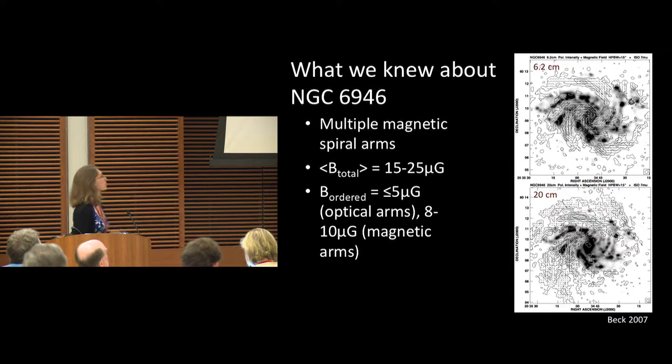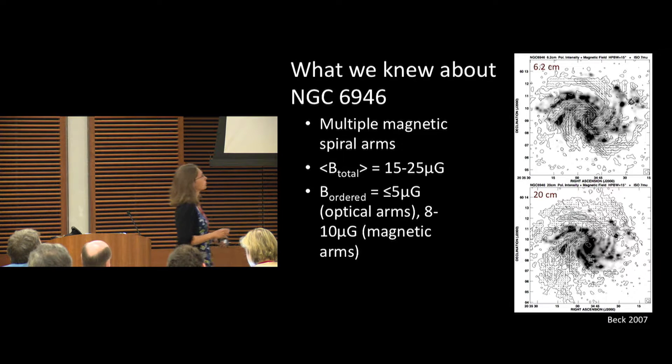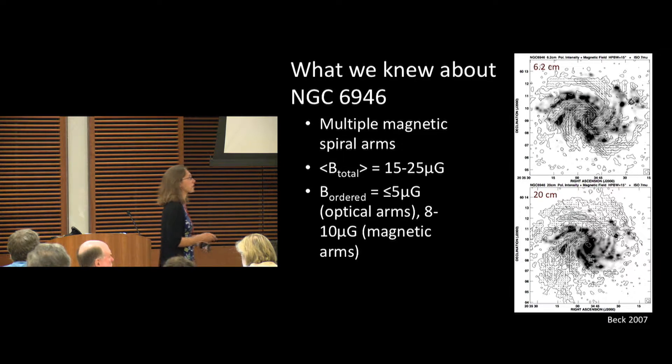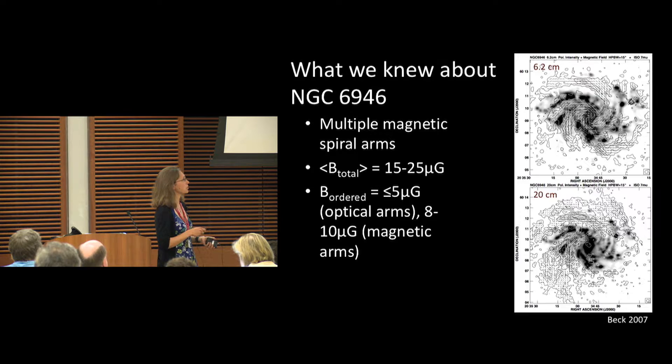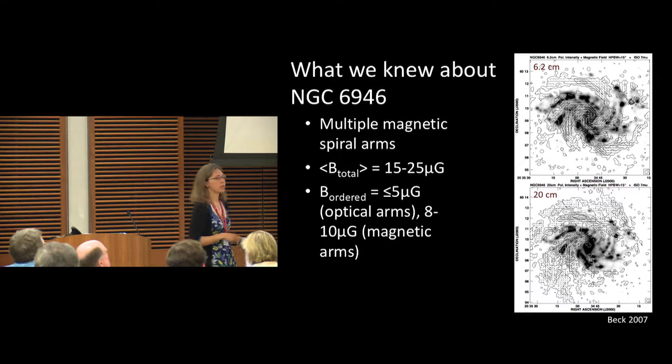What was known about this galaxy beforehand? Reiner Beck did some great work earlier in 2007 where he looked at NGC 6946 at shorter wavelengths in addition to these longer wavelengths. When you compare the shorter wavelength observations in polarization to the longer wavelength observations, you start to recover some of that polarized emission in that region that is strongly depolarized at longer wavelengths.